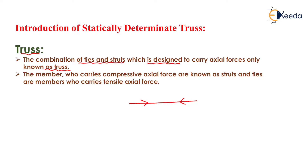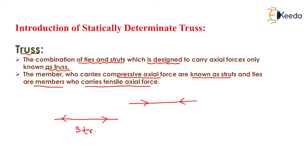The members who carry compressive axial forces are known as struts, and ties are the members who carry tensile axial forces. If a member carries only compressive axial forces then that member is known as a strut, and if a member carries only tensile axial forces then that member is known as a tie. Struts carry only axial compressive force and ties carry only tensile axial force.